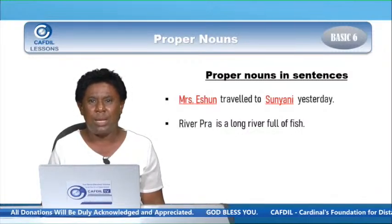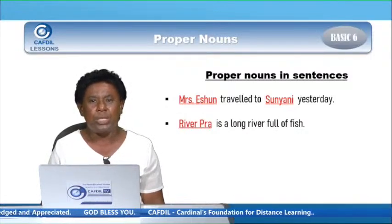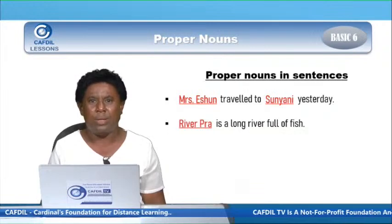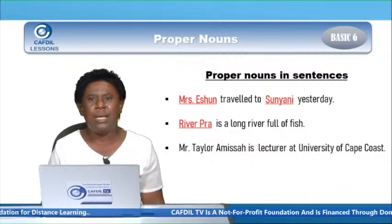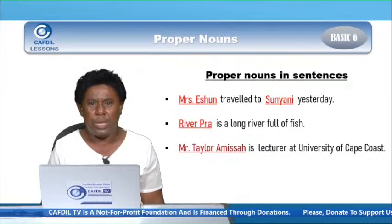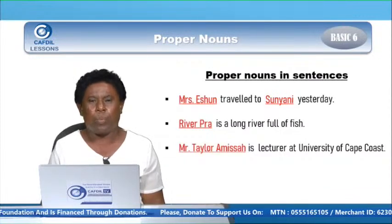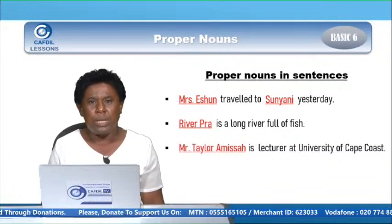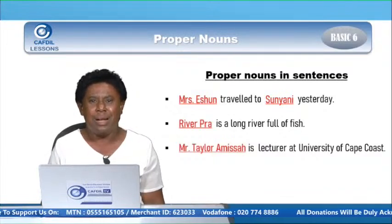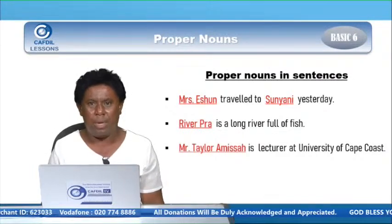Let's find out the proper nouns in the next sentence. River Pra — as we said, it's a particular name given to that river. It starts with capital R for River, and P for Pra, and it's a proper noun. In the next sentence, let's identify the proper nouns. Mr. Atta Mensa — this is also a particular name given to a gentleman or a man. It begins with capitals: Mr. — capital M, Taylor — capital T, Mensa — capital A, and it's a proper noun.